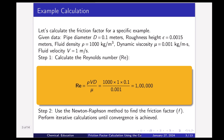Now, example calculation. Let's calculate the friction factor for a specific example. Given data: pipe diameter d = 0.1 meters, roughness height ε = 0.0015 meters, fluid density ρ = 1000 kg/m³, dynamic viscosity μ = 0.001 kg/(m·s), and fluid velocity v = 1 m/s.